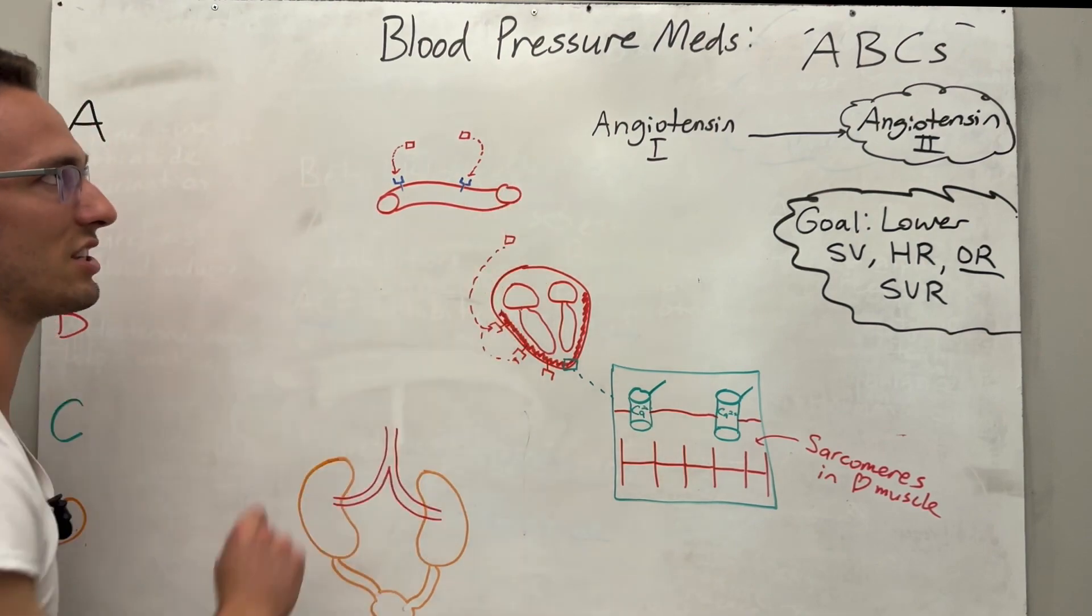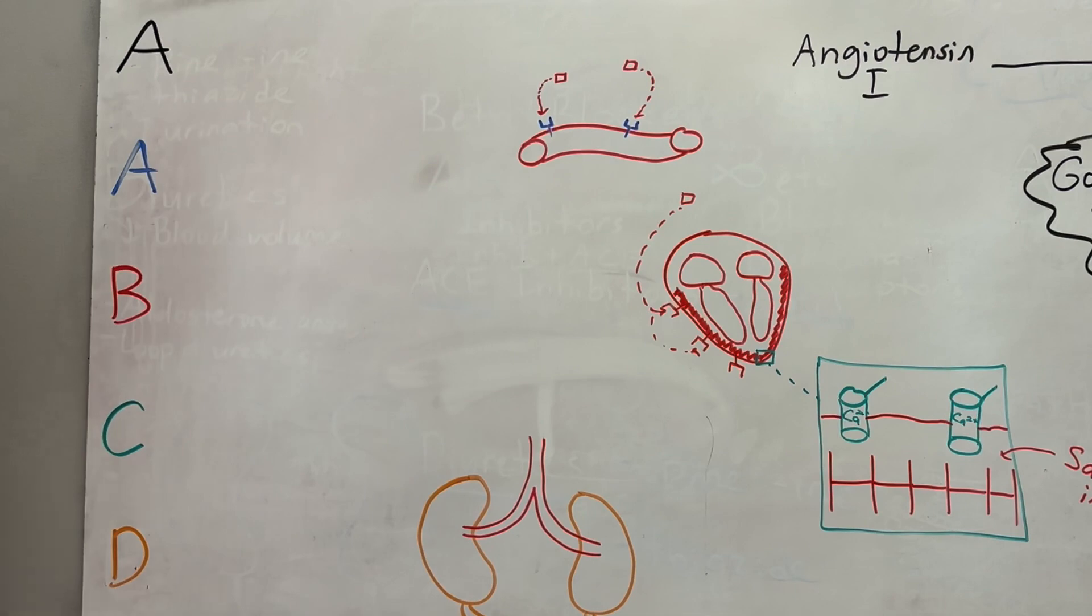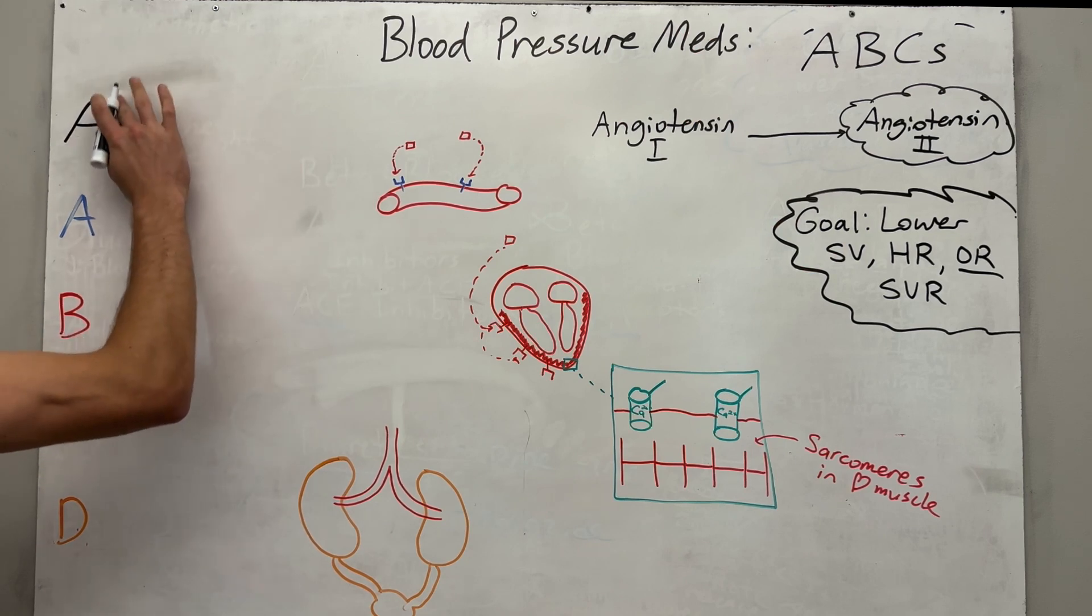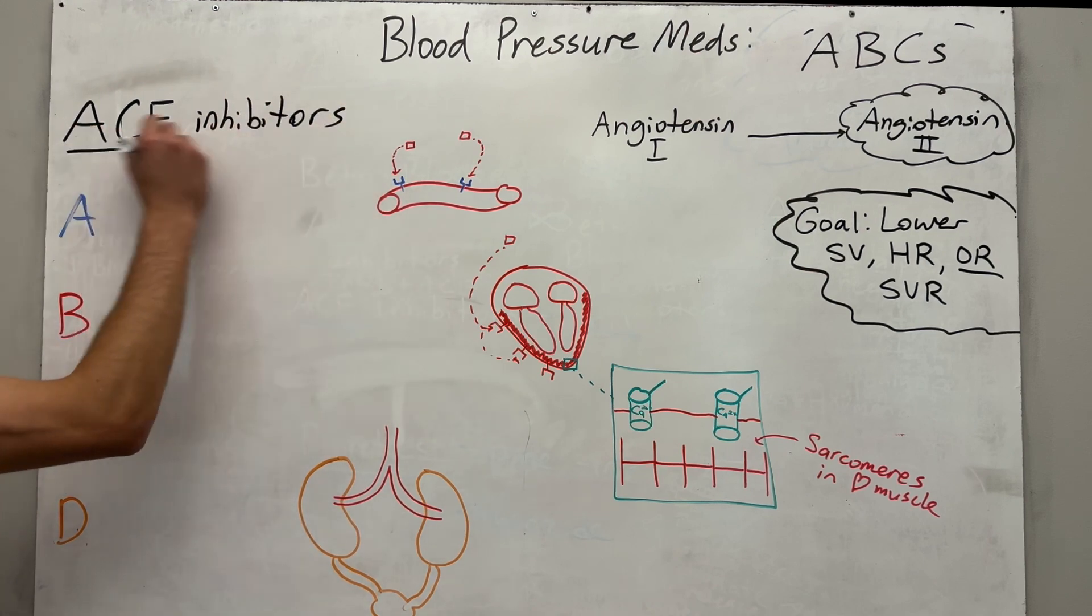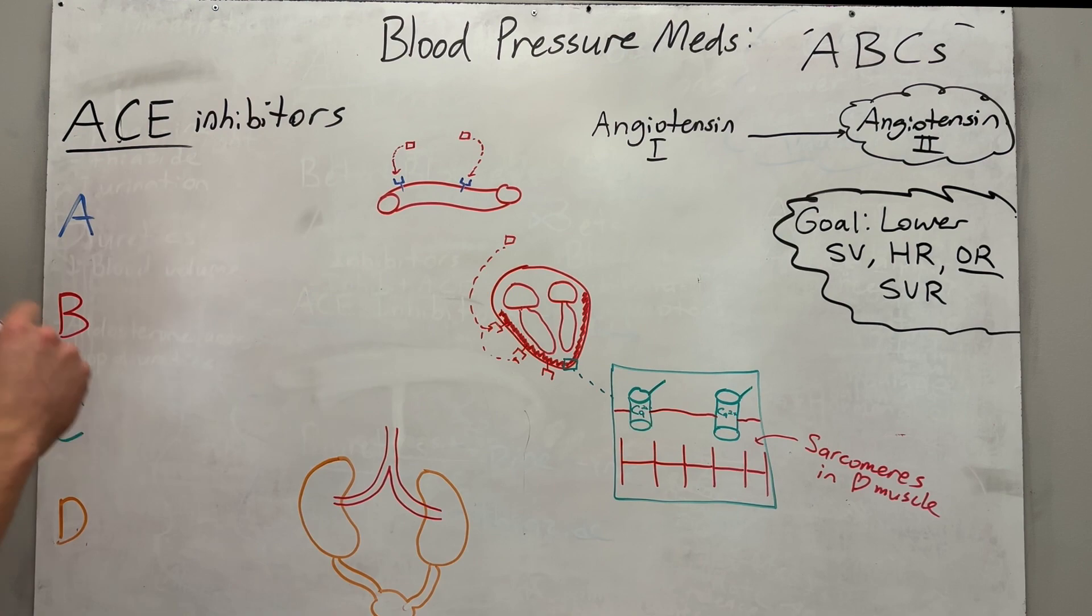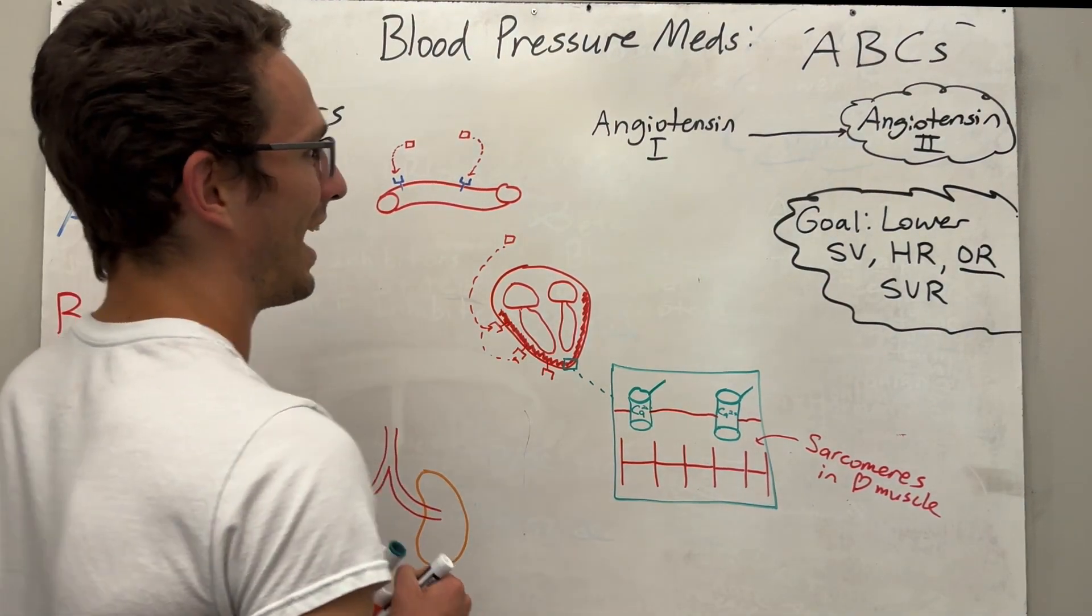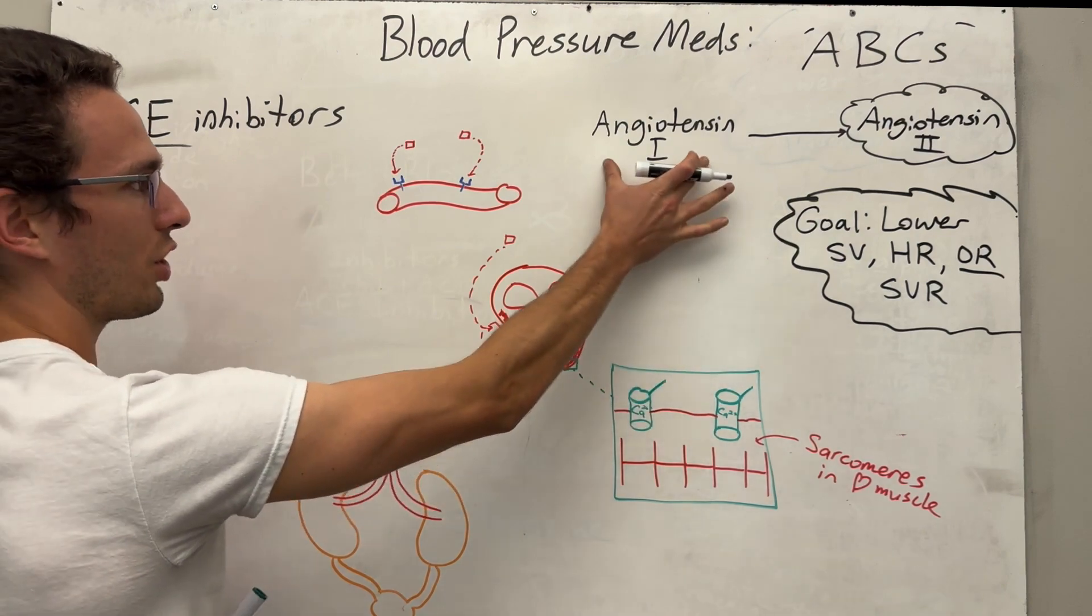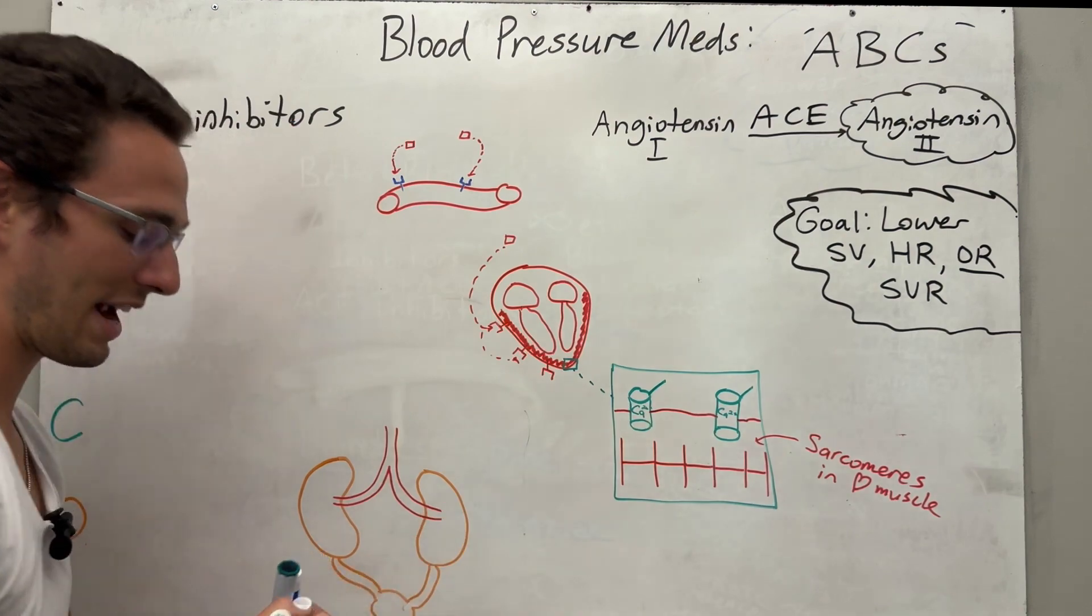These are the ABCs of blood pressure medications because check out the letters. We've got two A's and then B, C, and D. So let's start with the first A. The first A we're going to talk about are going to be called ACE inhibitors. So they are going to inhibit whatever the heck ACE is. In the previous video, I talked about ACE being angiotensin converting enzyme. This is found in the lungs and it is going to catalyze this reaction of converting angiotensin one to angiotensin two.